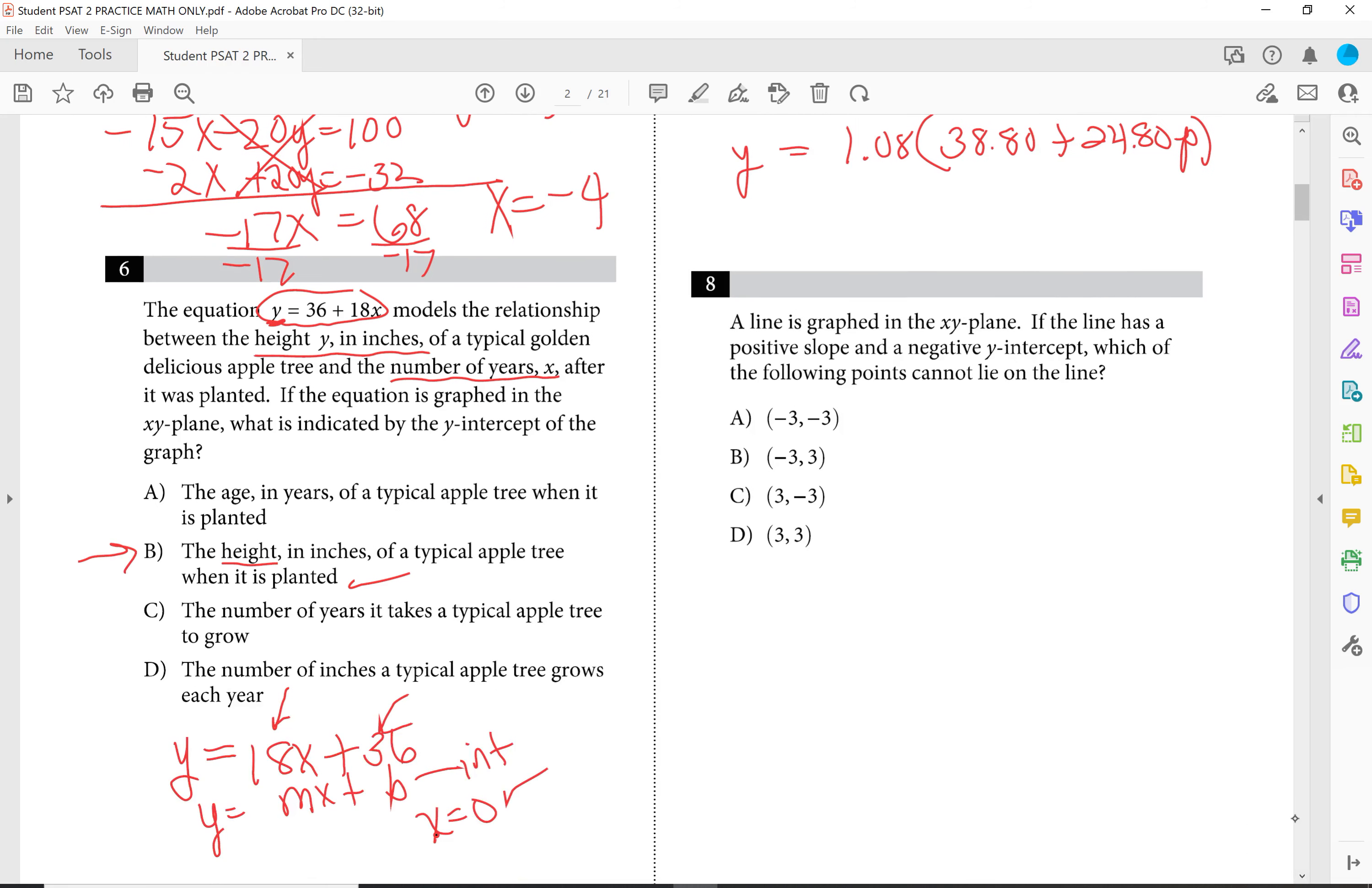This question my class actually enjoyed. In this case, it says the line is graphed in the XY plane. If the line has a positive slope, keyword positive slope, and a negative Y intercept, so there is an intercept present, meaning that it will never cross the origin. If it has an intercept, it has to be at least negative one or more, right? And it has a positive slope, which means that it has to go left to right, it has to go up, right?